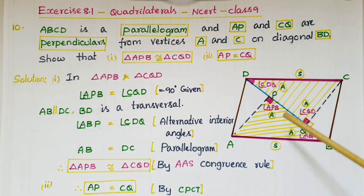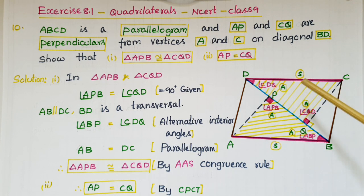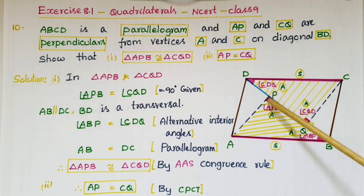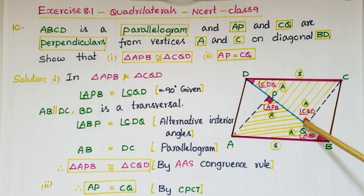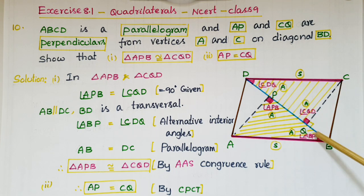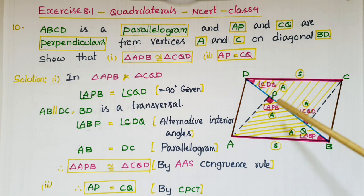Now we have to prove these two triangles congruent. So mark the corresponding equal parts of these two triangles. We know that these two angles are 90 degrees because these two lengths are perpendiculars, and again if you observe, these two angles are alternate interior angles because these two lines are parallel.